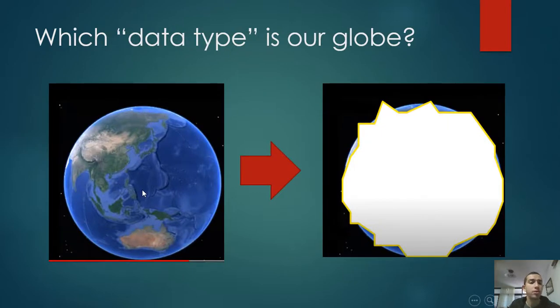First, when you program in Cesium you need to know which data type is our globe. When you look at the globe it looks like the globe is a ball, but it's not. Our world actually looks more like this yellow shape.